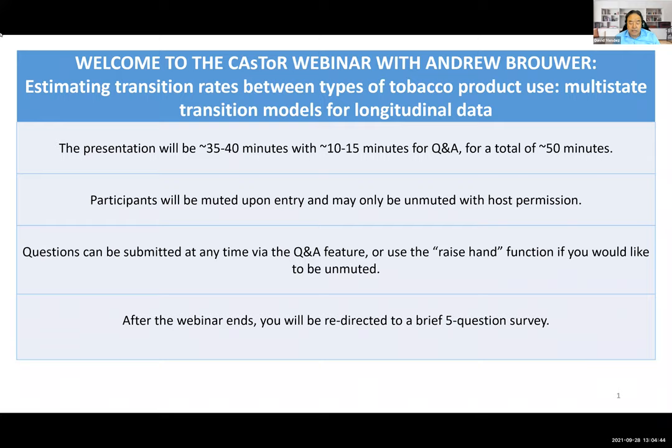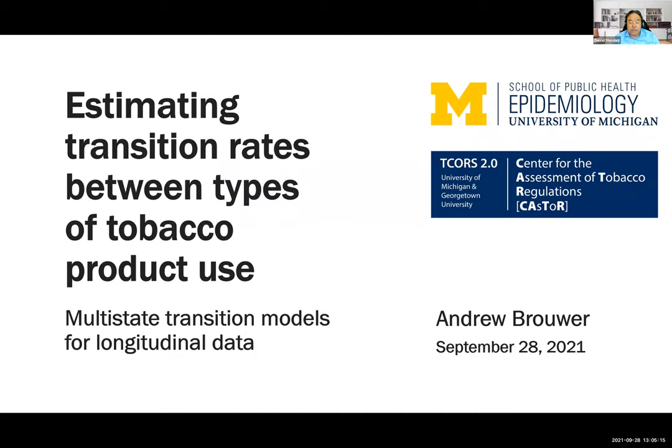Dr. Brower specializes in mathematical and statistical techniques for a variety of application areas, including infectious disease, cancer, and tobacco control. Today's webinar presentation is entitled Estimating Transition Rates Between Types of Tobacco Product Use: Multi-State Transition Models for Longitudinal Data. In the presentation, Dr. Brower will provide an overview of multi-state transition modeling, a technique for analyzing longitudinal data increasingly used in the tobacco control field to estimate multiple transition rates — for example, smoking initiation, cessation, and switching between products and combustible cigarettes and e-cigarettes. And now, without further ado, I leave you with Dr. Andrew Brower.